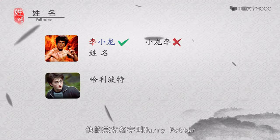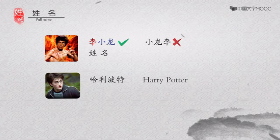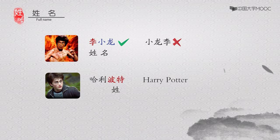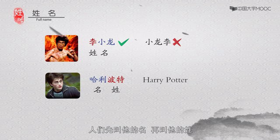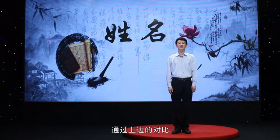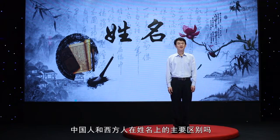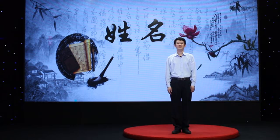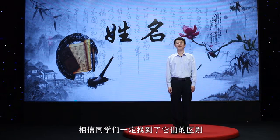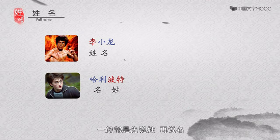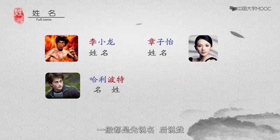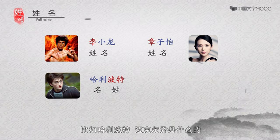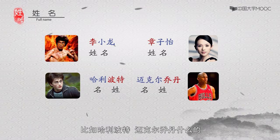再看哈利波特的名字。他的英文名字叫哈利波特,在这里波特是他的姓,哈利是他的名字,在这个名字中人们先叫他的名再叫他的姓。通过对比,在中国的姓名中一般都是先说姓再说名,比如李小龙、张子怡。但是在西方姓名中一般都是先说名后说姓,比如哈利波特、麦克尔乔丹。